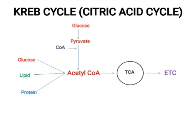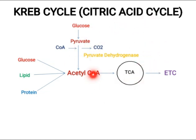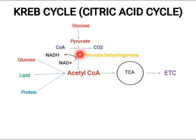In pyruvate oxidation, Coenzyme A is added and carbon dioxide is removed. The enzyme involved in this step is pyruvate dehydrogenase enzyme. This pyruvate dehydrogenase enzyme removes hydrogen from pyruvate, and that hydrogen is picked up by NAD⁺, which gets converted into NADH.